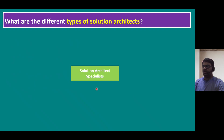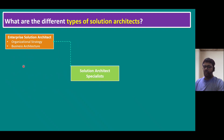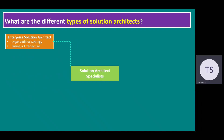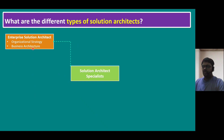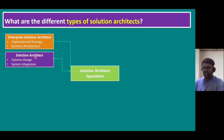What are the different types of solution architects? Generally there are so many specialist types in the solution architect role, the same way engineering has different specializations and medicine has different specializations. The first one is enterprise solution architect — their main focus is on organizational strategy and business architecture.